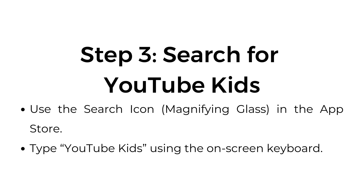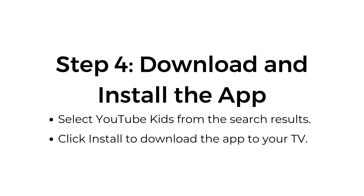Step three: search for YouTube Kids. Use the search icon (magnifying glass) in the app store and type YouTube Kids using the on-screen keyboard. Step four: download and install the app. Select YouTube Kids from the search results and click install to download the app to your TV.